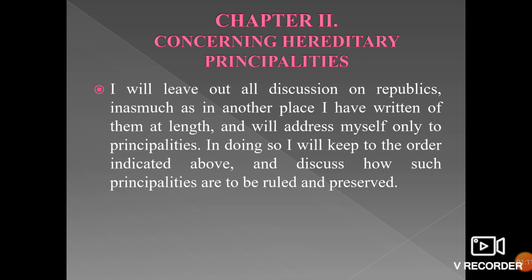Machiavelli then discusses hereditary principalities, which are used to being ruled by the prince's family. These are easy to maintain because tradition keeps the prince's position stable, as long as he does not make himself hated. In chapter 1, Machiavelli traces the basic outlines for discussion covering chapters 1 through 11: the different types of states, how to acquire them, and the difficulties they present to a ruler.